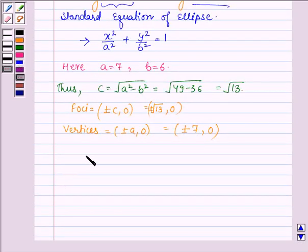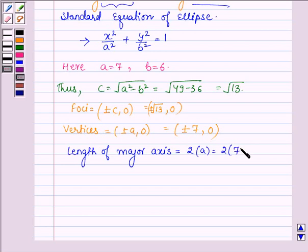The length of major axis equals 2a = 2(7) = 14, and the length of minor axis equals 2b = 2(6) = 12.